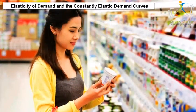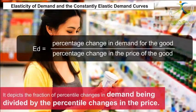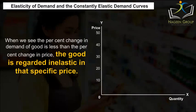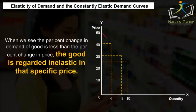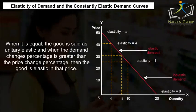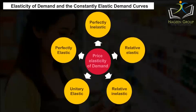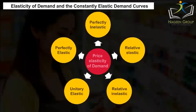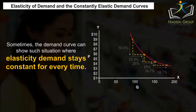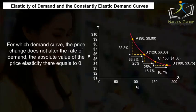Elasticity of Demand and Constantly Elastic Demand Curves. The price elasticity of demand is a proportion and thus has no units. It depicts the fraction of percentile changes in demand divided by the percentile changes in price. When the percent change in demand is less than the percent change in price, the good is regarded as inelastic at that specific price. When they are equal, the good is said to be unitary elastic. When the demand change percentage is greater than the price change percentage, the good is elastic. The demand curve where the price change does not alter the rate of demand has an absolute price elasticity equal to zero, and the vertical demand curve becomes absolutely inelastic.